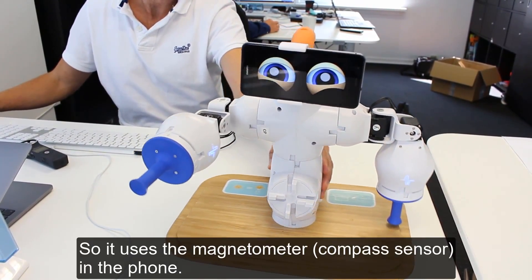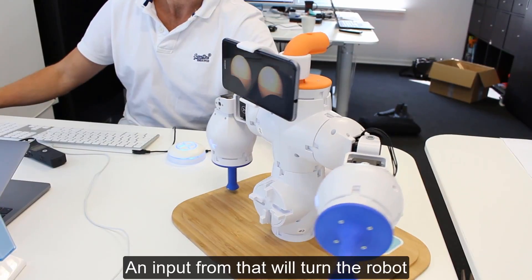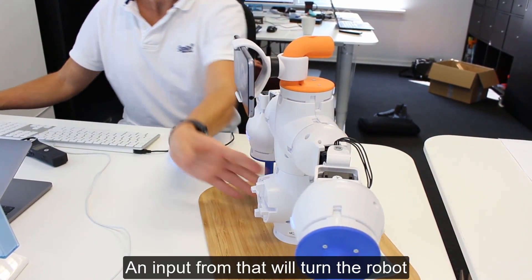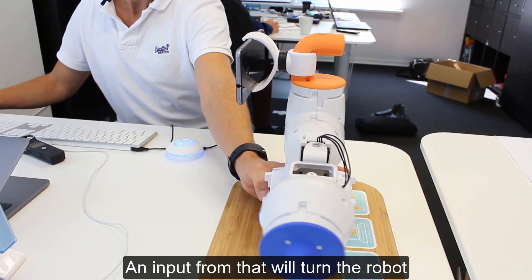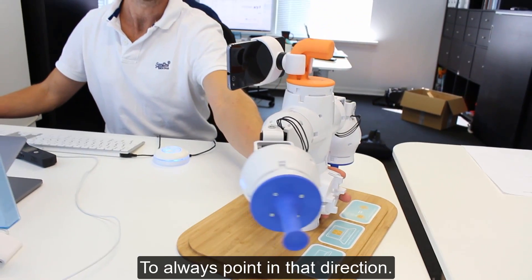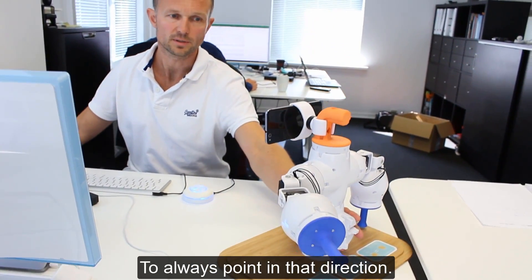It uses the magnetometer in the phone. An input from that will turn the robot to always point in that direction.